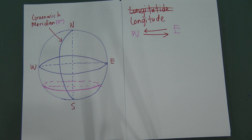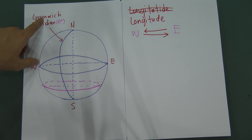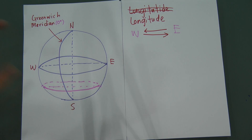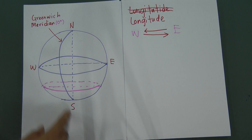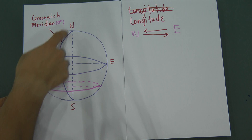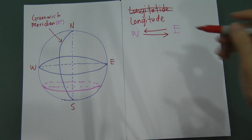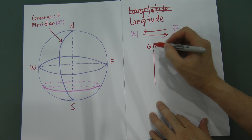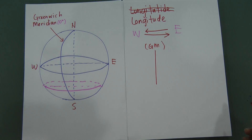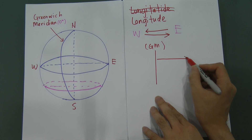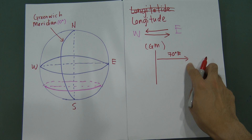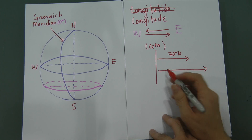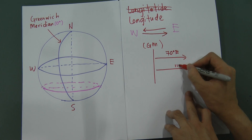When you see the word longitude, you have to find one very important line which we call the Greenwich Meridian. The Greenwich Meridian is the zero angle for longitudes, meaning all longitudes start at this line. For example, if from the Greenwich Meridian I move 70 degrees to the east side, we call it 70E.